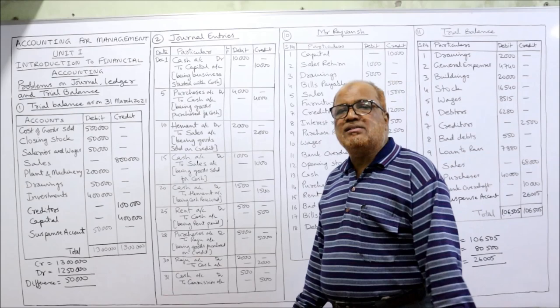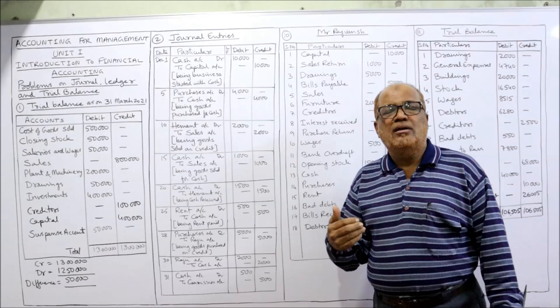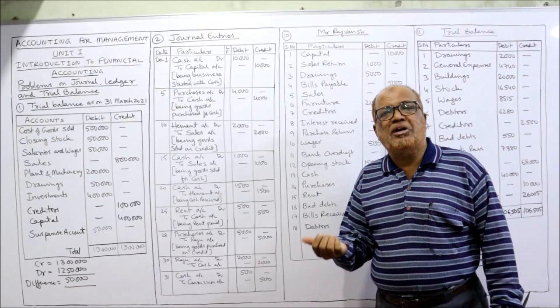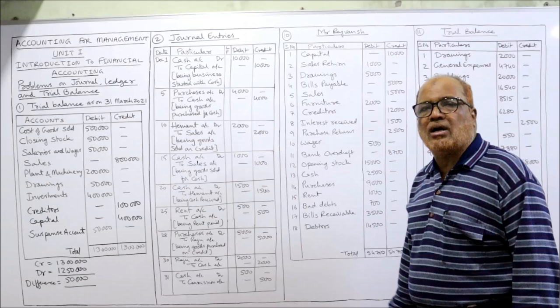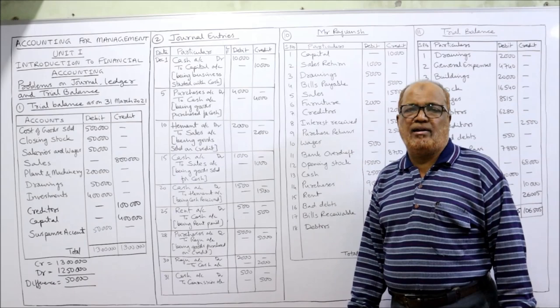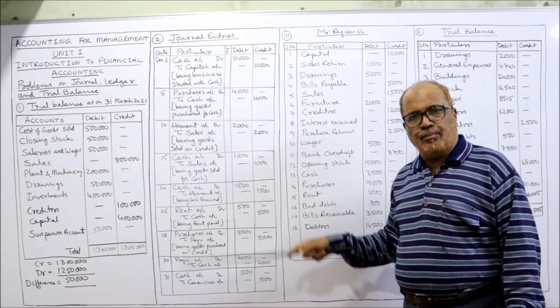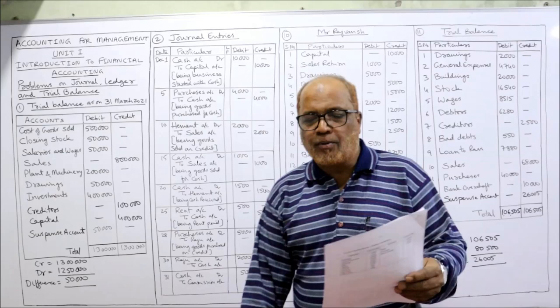Last entry: received commission. Cash is coming in, so cash should be debited. Commission is the income — commission should be credited. Entry: Cash account Dr. to Commission account. Narration: being commission received. That completes the second problem on passing journal entries. So far two problems completed — first on preparing trial balance, second on passing journal entries.